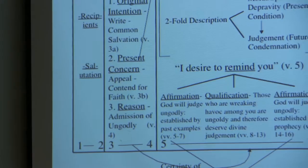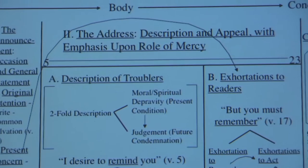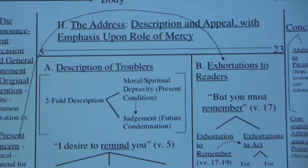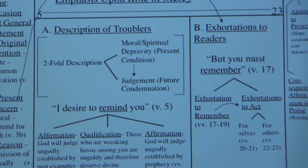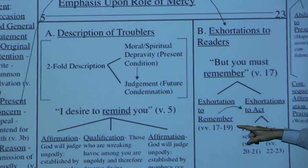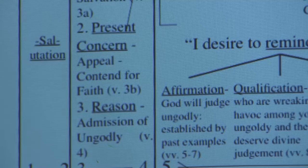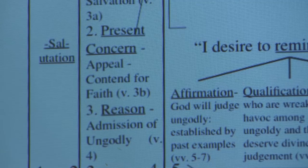When you come to verses 5 through 23, I've given this a label: the address. It involves the description especially of the troublers and the appeal as to what to do in their presence, with an emphasis on the role of mercy. In the general statement of verses 3 and 4, he first makes the appeal to contend for the faith, and then gives the reason — the admission of the ungodly. Then in the address he reverses the order, beginning with the description of the ungodly in verses 5 through 16.